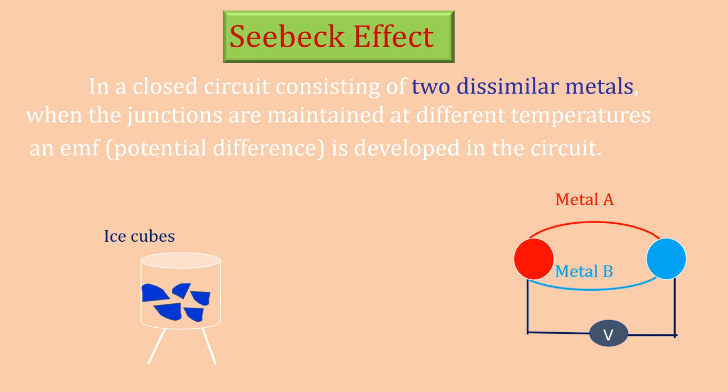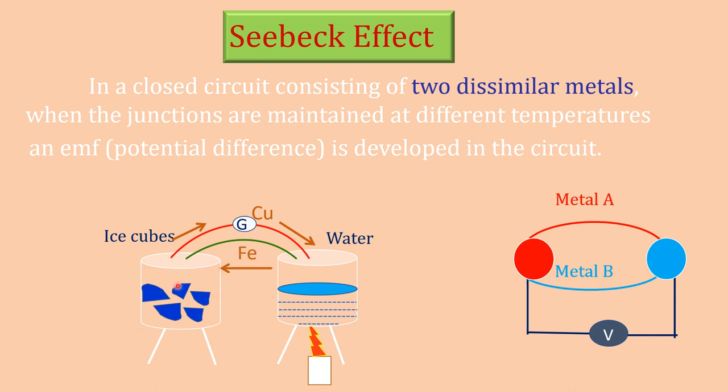This is metal A and this is metal B. They are dissimilar metals. They form two junctions. One of the junctions is placed in hot water and another junction is placed in cool water or ice cubes. So, they are maintained at different temperatures. At that time, a potential difference is developed in the circuit. This is the effect given by Seebeck and so it is called as Seebeck effect.